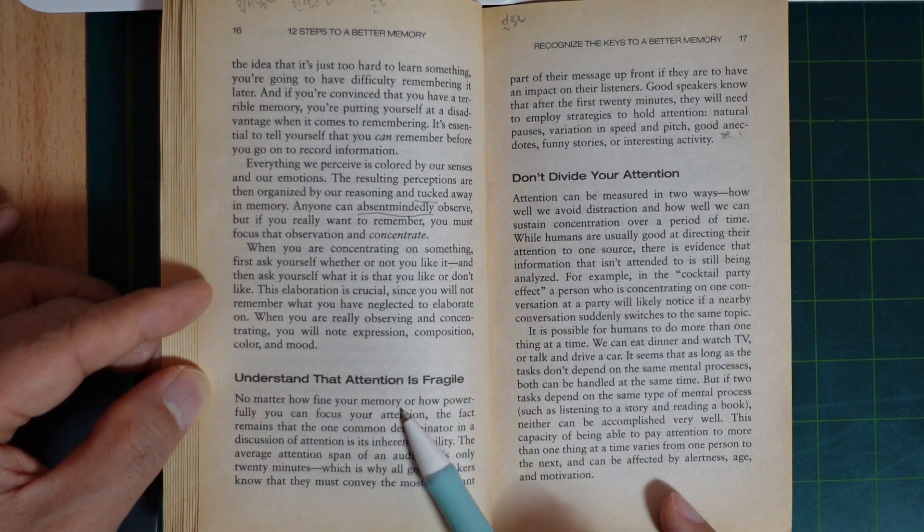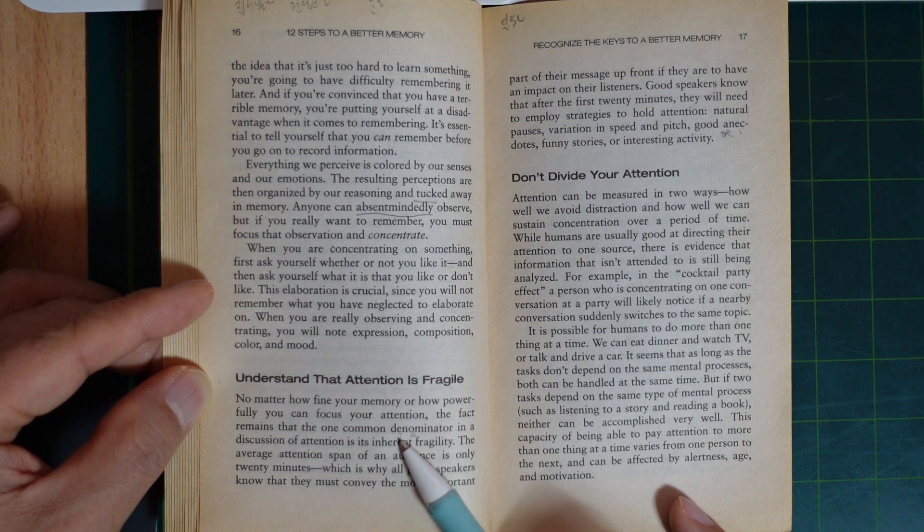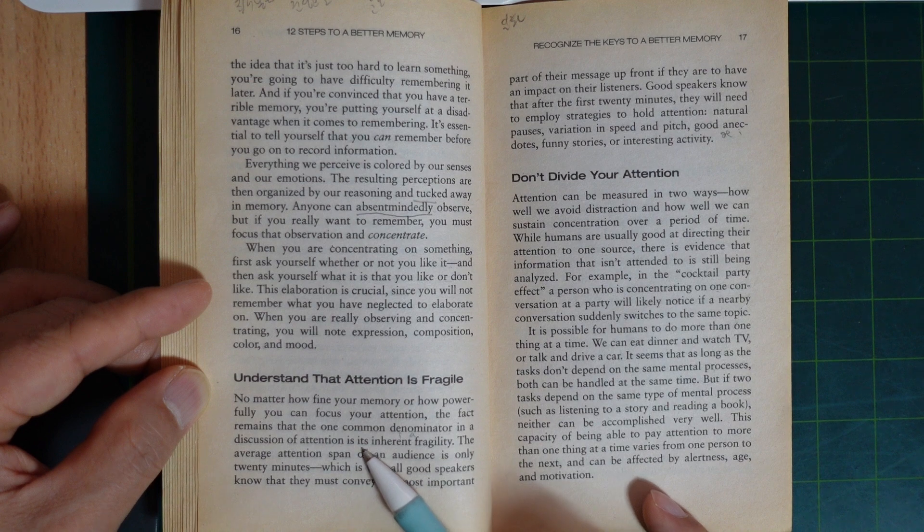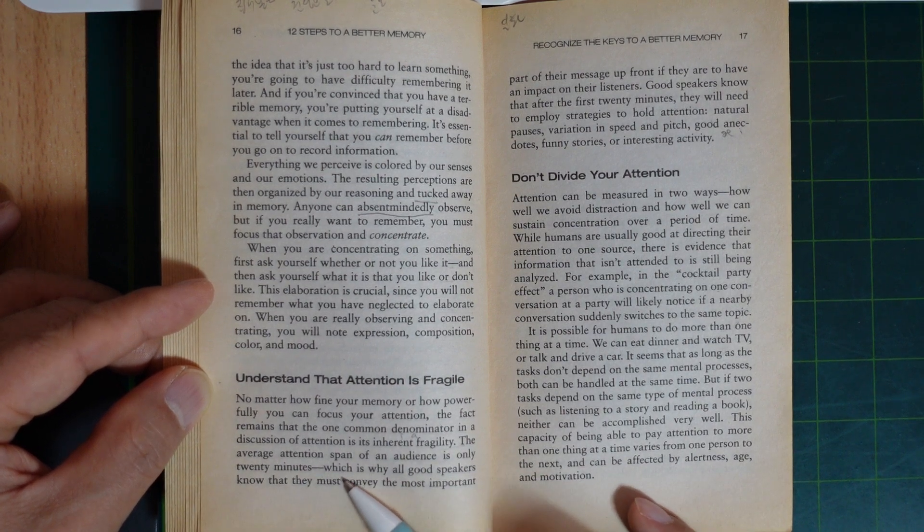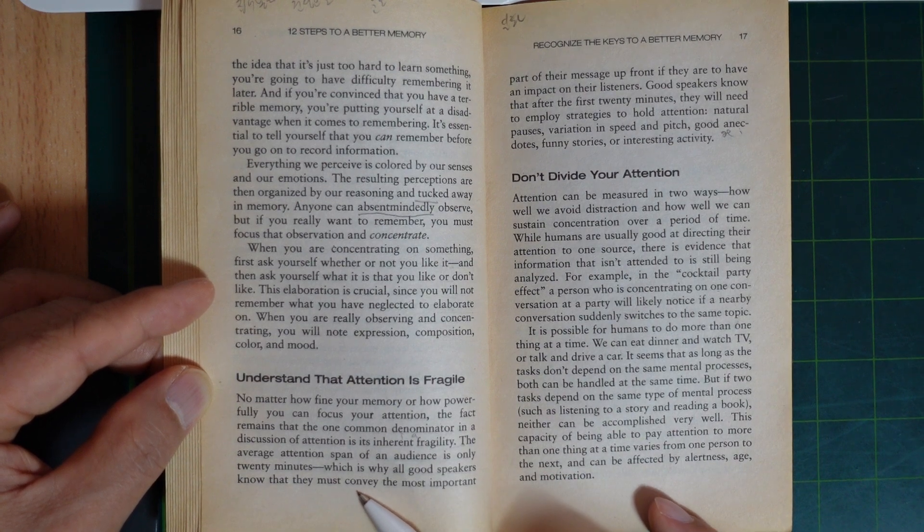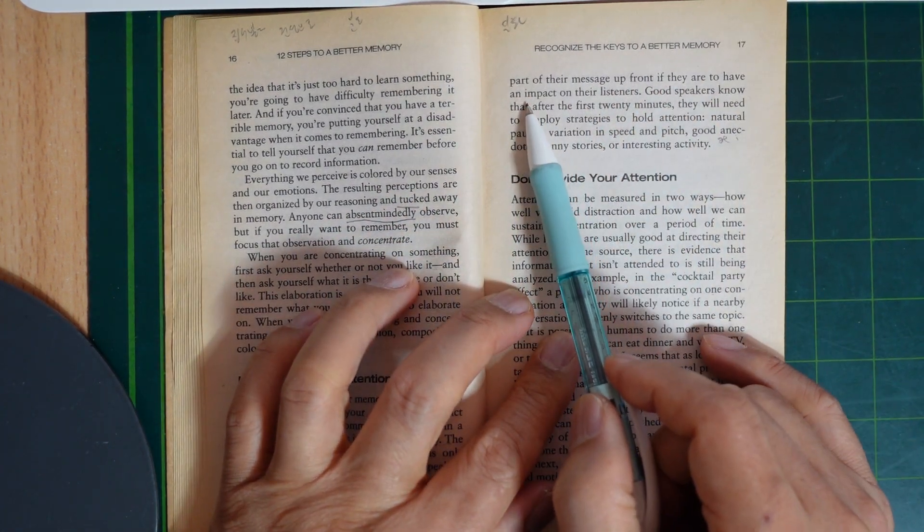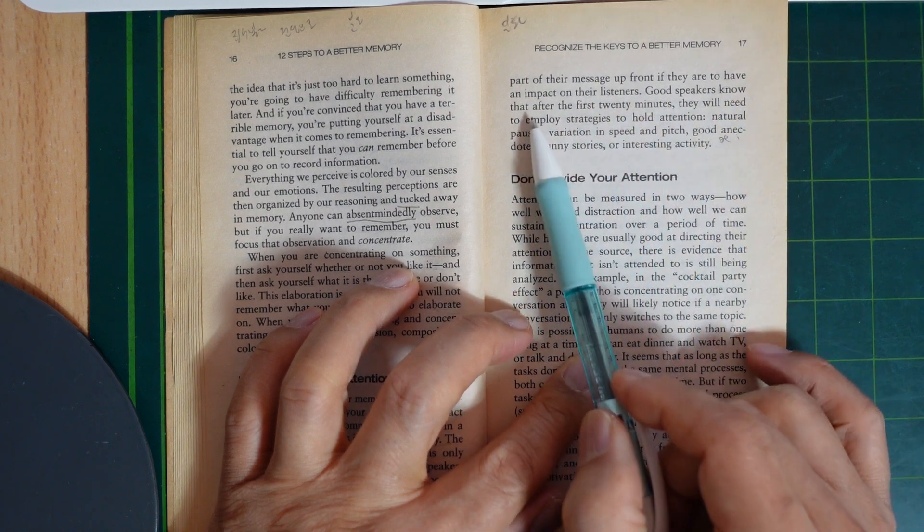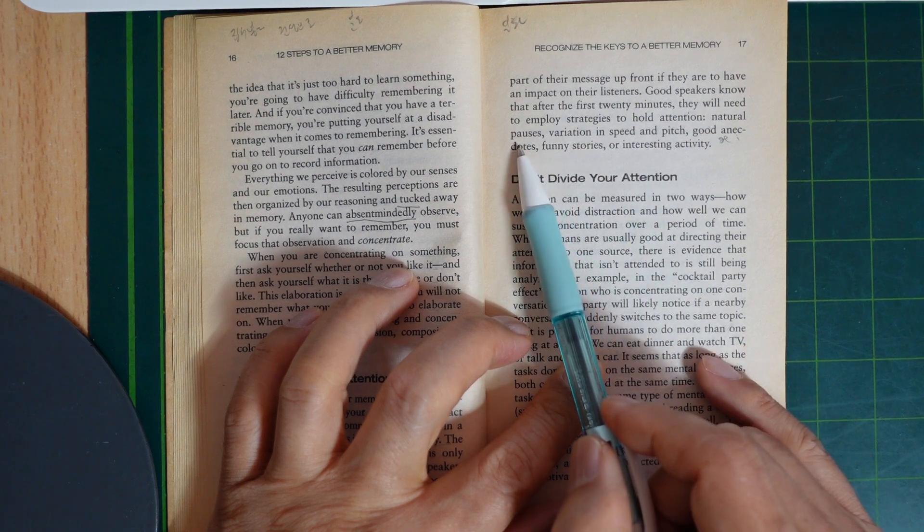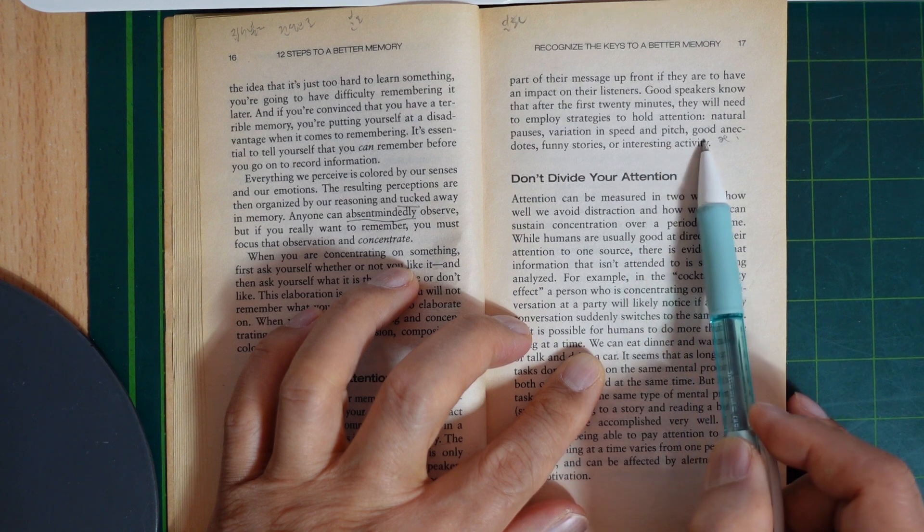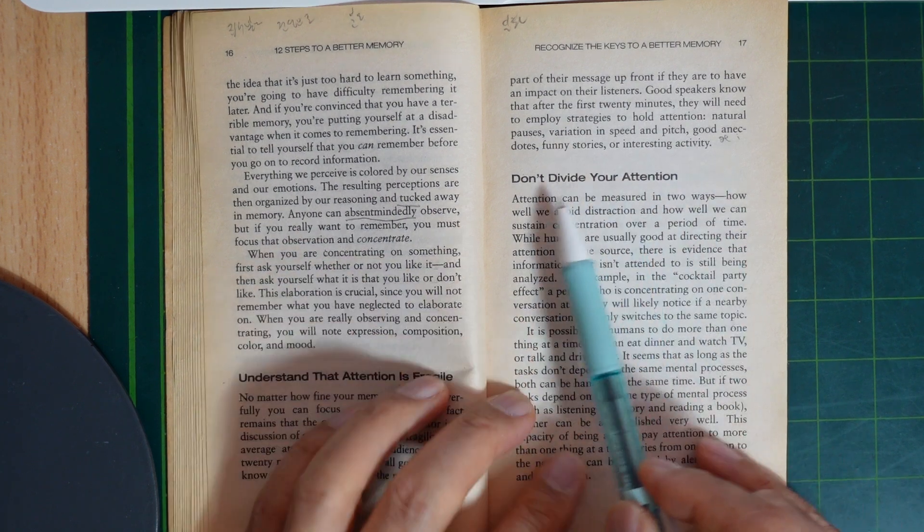Understand that attention is fragile. No matter how fine your memory or how powerfully you can focus your attention, the fact remains that the main common denominator in a discussion of attention is its inherent fragility. The average attention span of an audience is only 20 minutes, which is why all good speakers know that they must convey the most important part of their message up front if they are to have an impact on their listeners. Good speakers know that after the first 20 minutes, they will need to employ strategies to hold attention: natural pauses, variation in speed and pitch, good anecdotes, funny stories, or interesting activities.